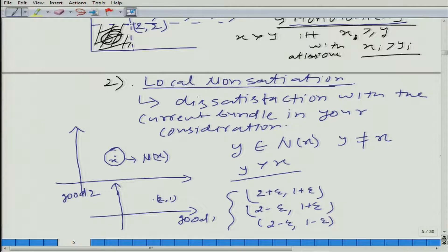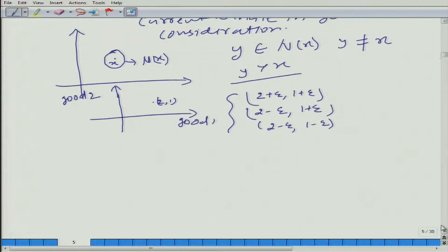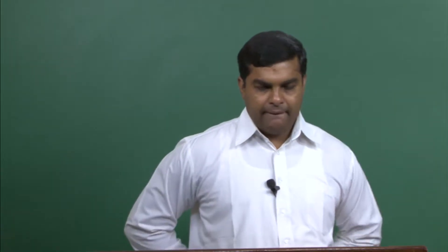So, the first form says 'more is better,' and the second says you are not happy with what you have. Which one is more stringent? Does monotonicity imply local non-satiation, or does local non-satiation imply monotonicity, or are they quite different? Think about it — are they the same, does one imply the other?